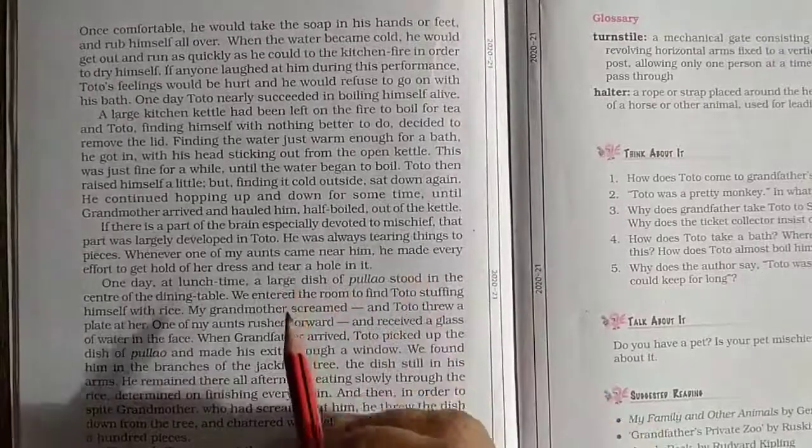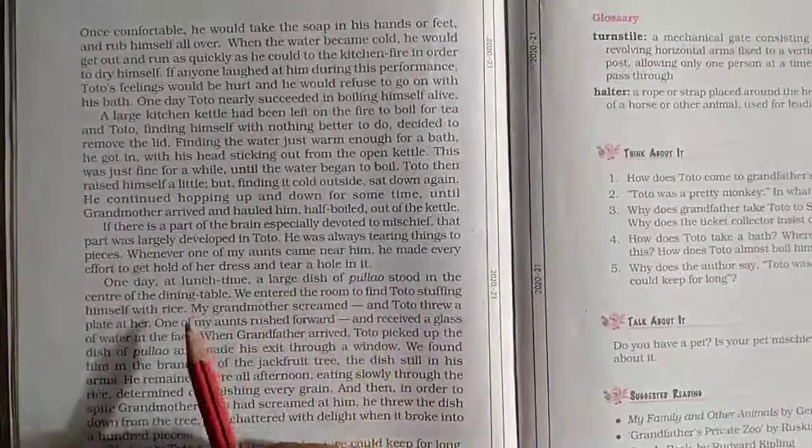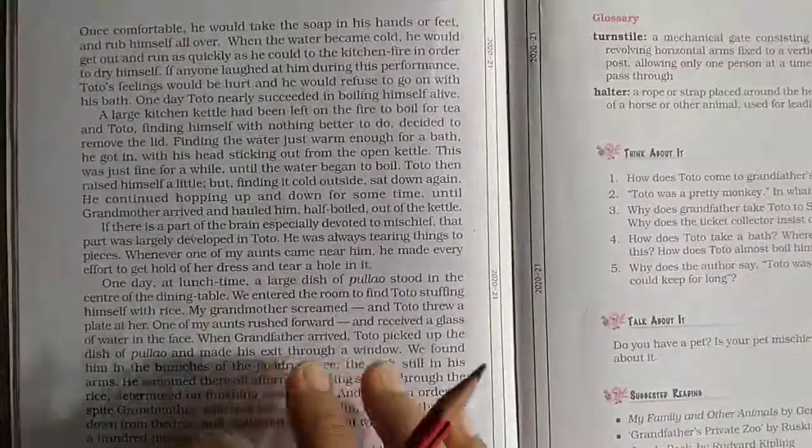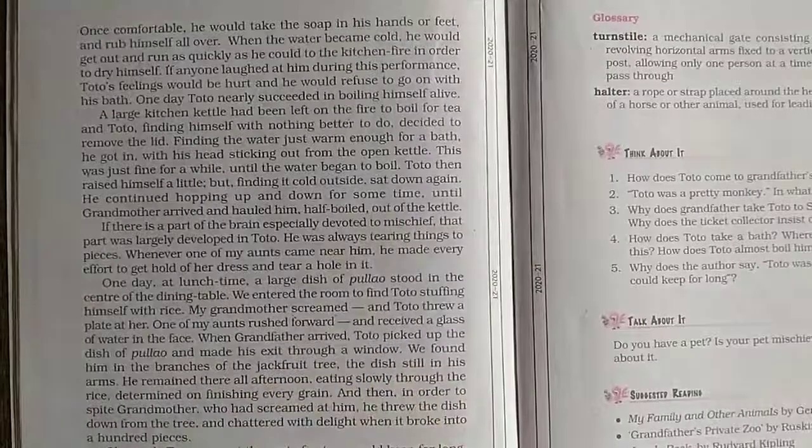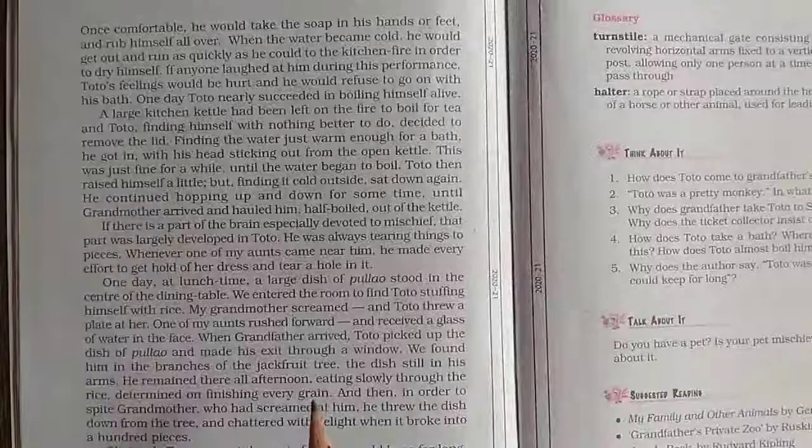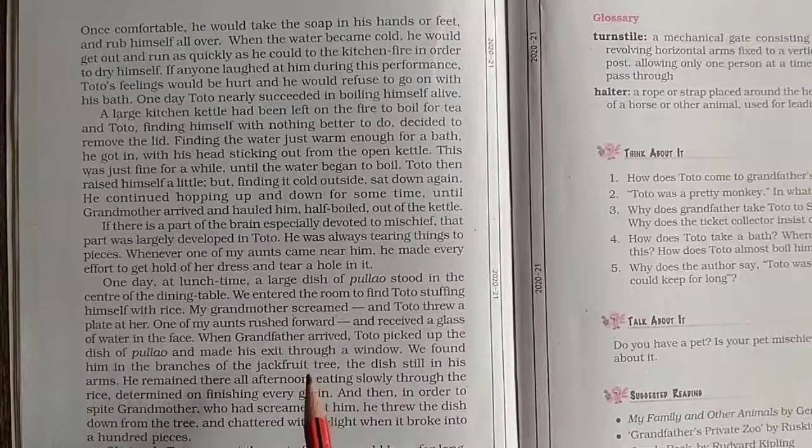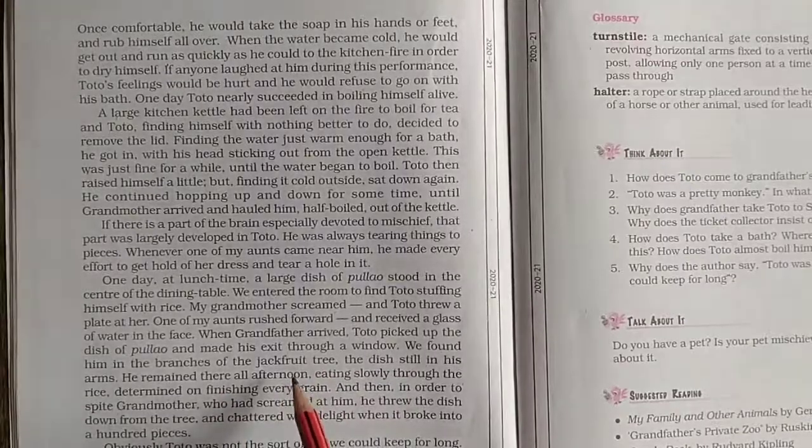Now one day, a large plate of pulao was standing on the dining table. Toto got into the room and began stuffing himself with the delicious pulao. When grandmother came in, she shouted at him. He threw a plate at her. One of the writer's aunts rushed forward, and Toto hurled a glass of water at her.